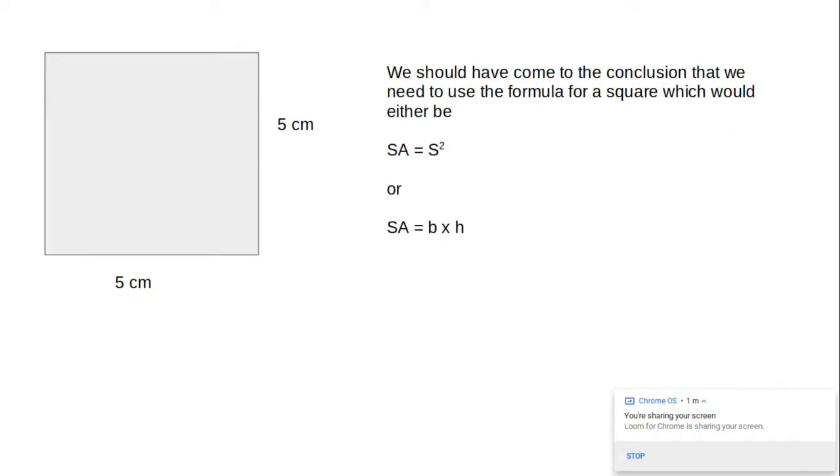Next, we should have come to the conclusion that to find the surface area, there's two possible formulas that we're going to use. Either the surface area equals side squared, or the surface area equals base times height. Whichever one you want to use and say you're using.